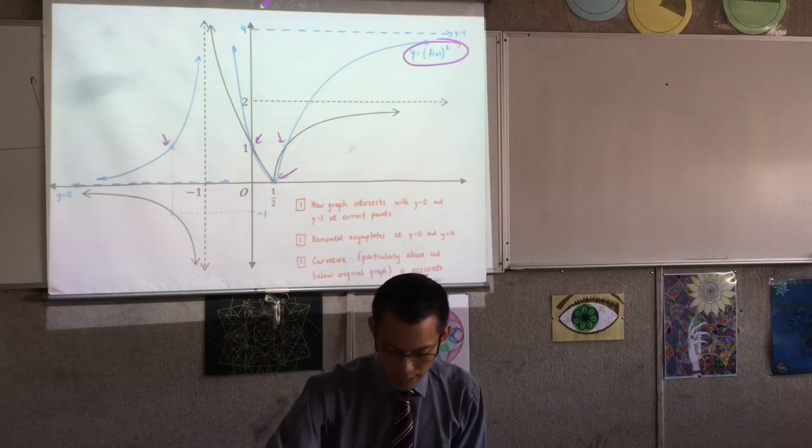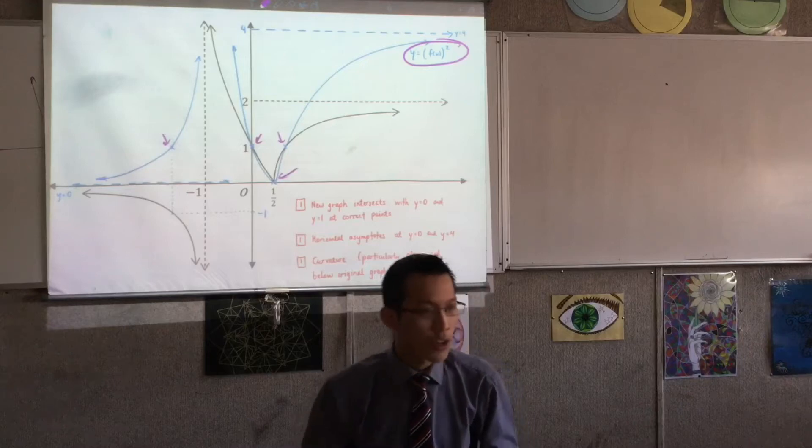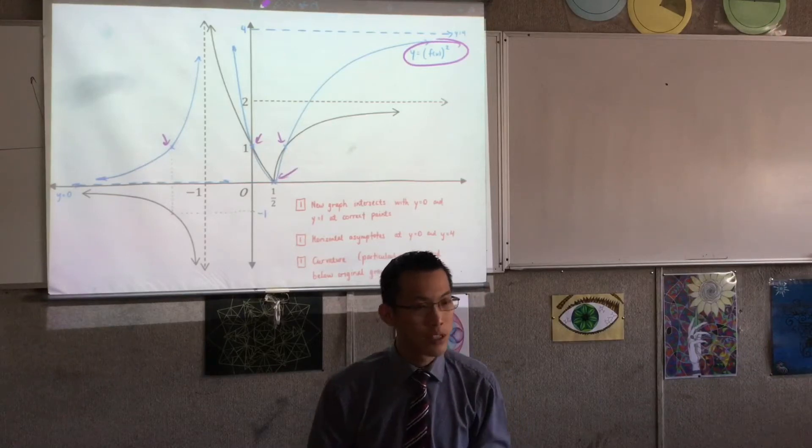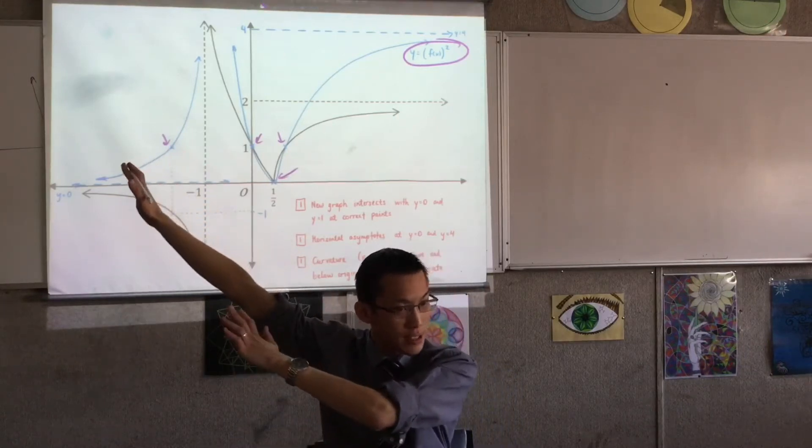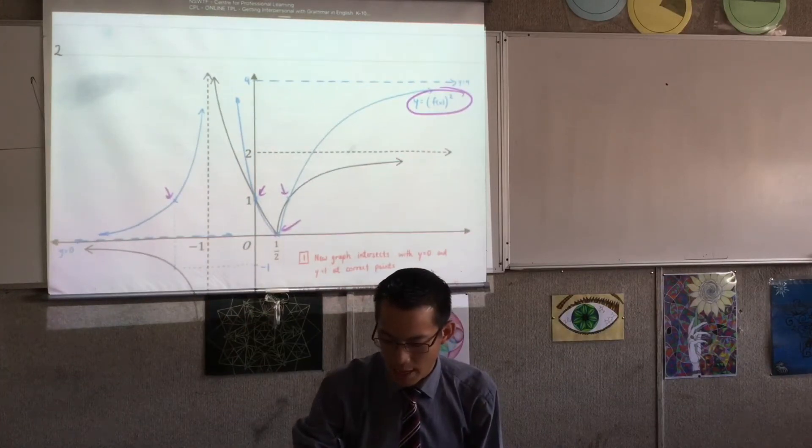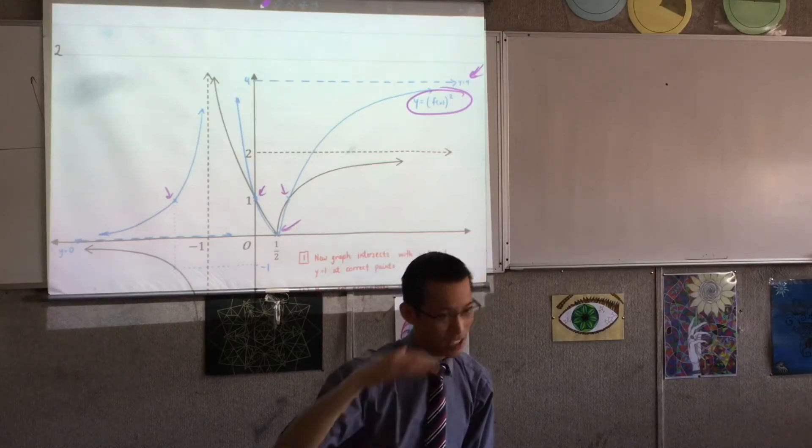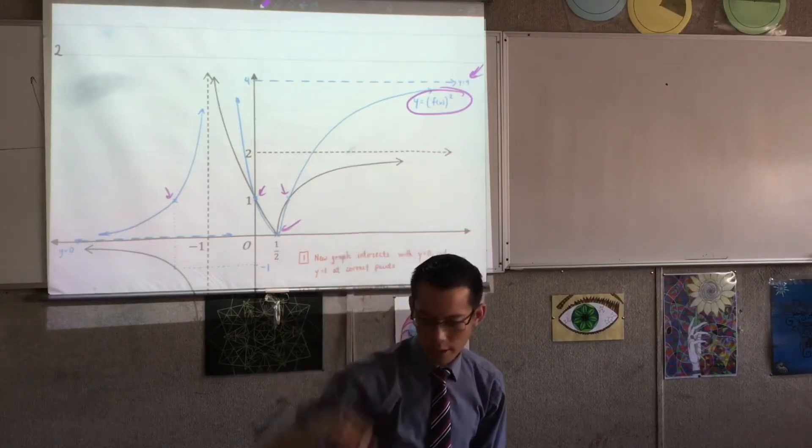But then they started to fall down when we had a look at the next thing. Horizontal asymptotes. Okay, you've got the y equals zero behaving on the left-hand side of the graph. A lot of people missed that it was going to be y equals four, and they just forgot. Oh, I actually know the value. It's going to be two, so it's going to be four.